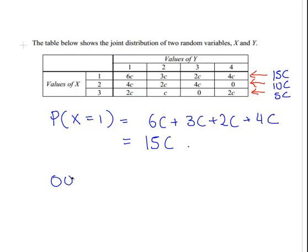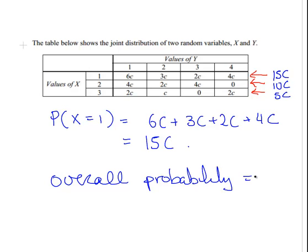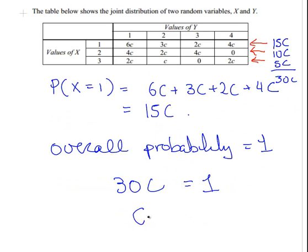Essentially, the overall probability has to equal 1 — this is an exhaustive table. So 30c, which is the sum of 15c, 10c, and 5c, has to equal 1. Therefore c is equal to 1 over 30.